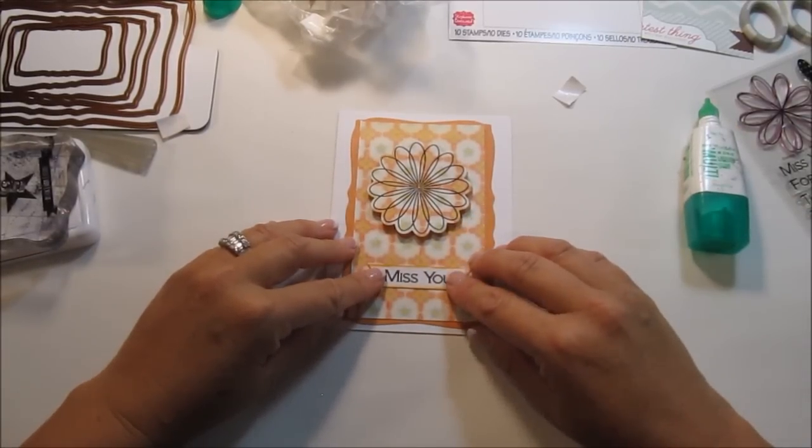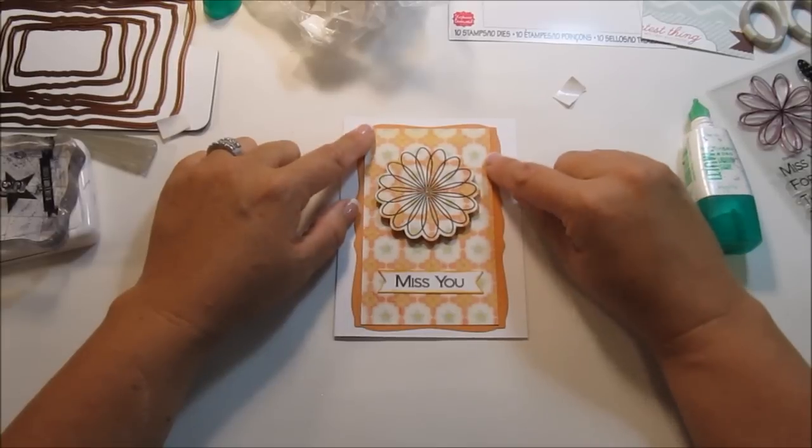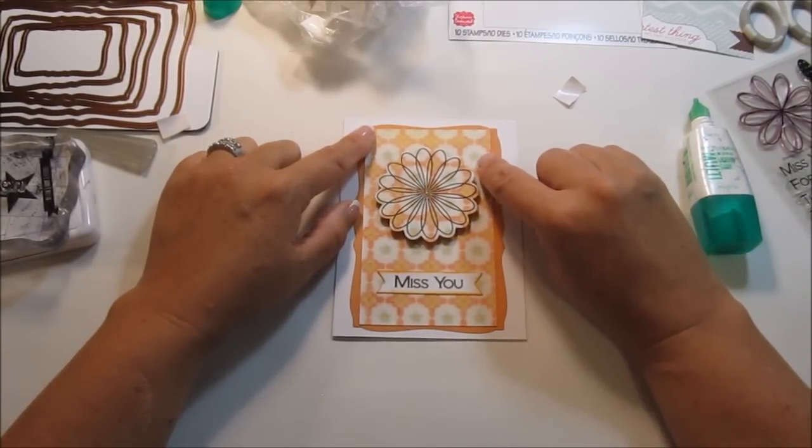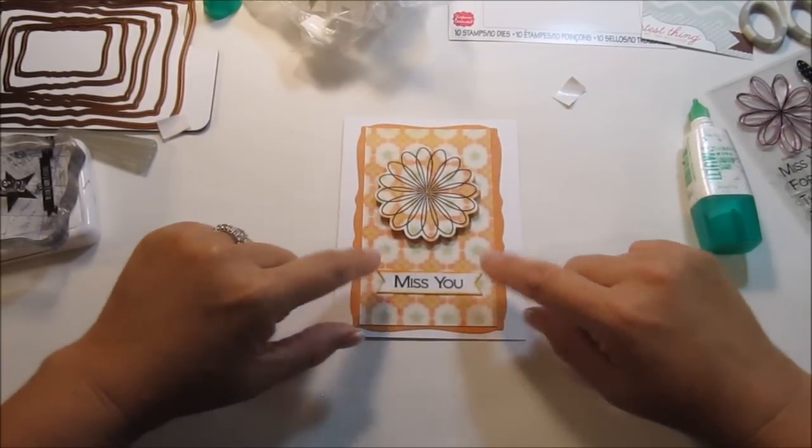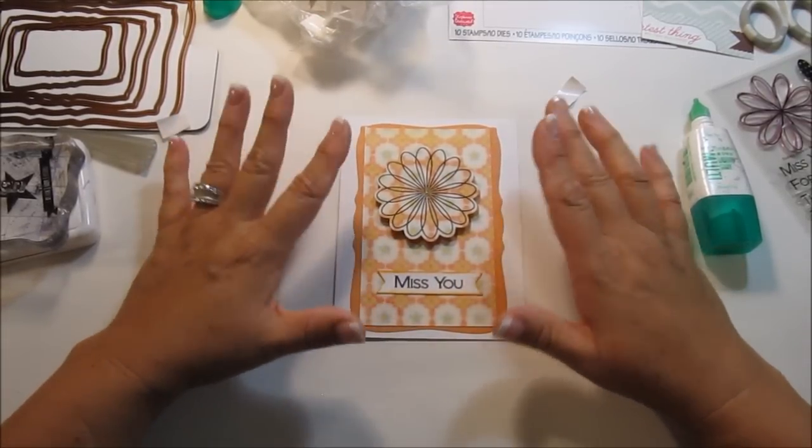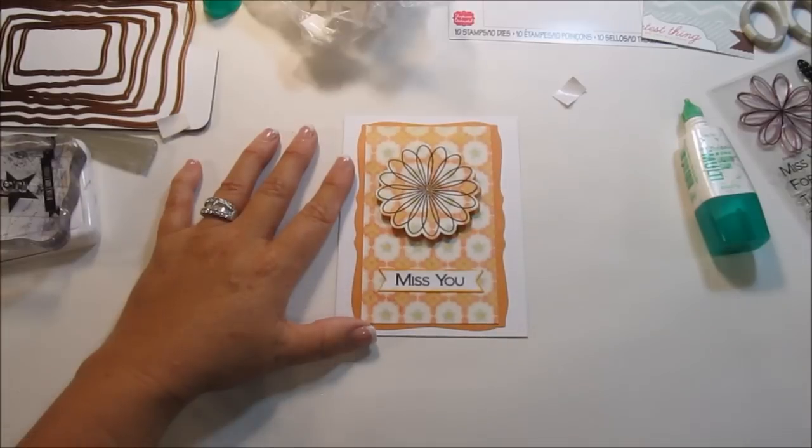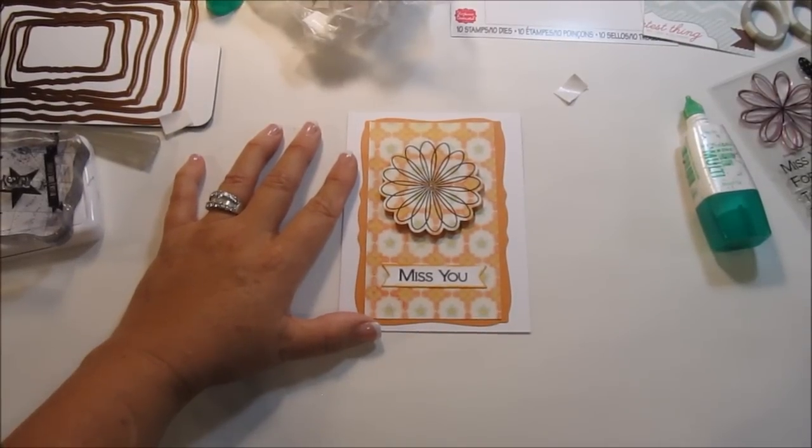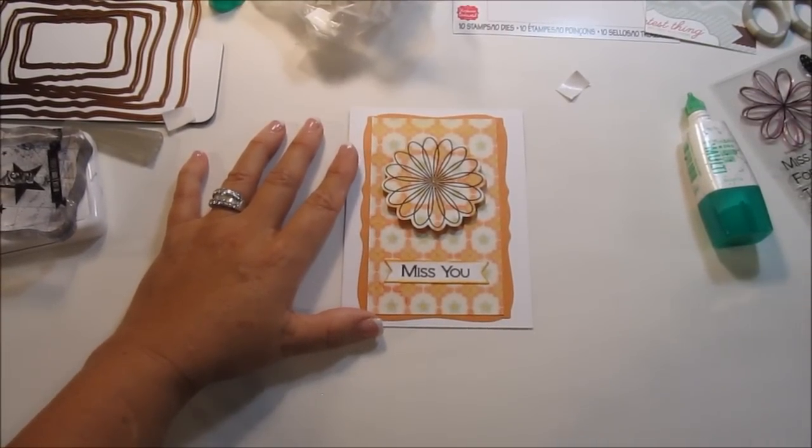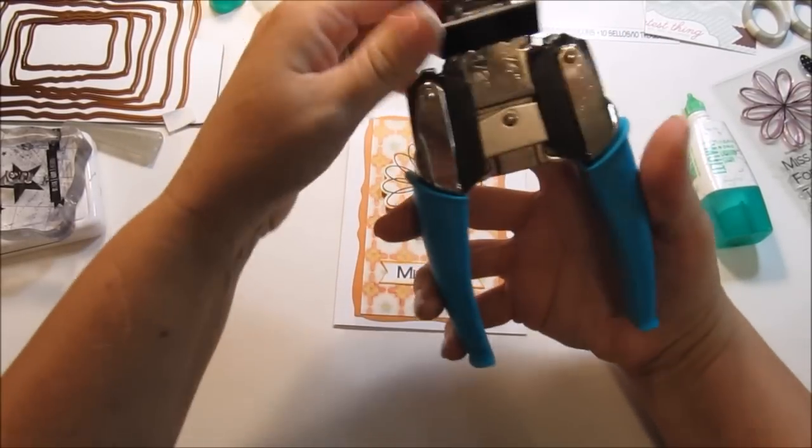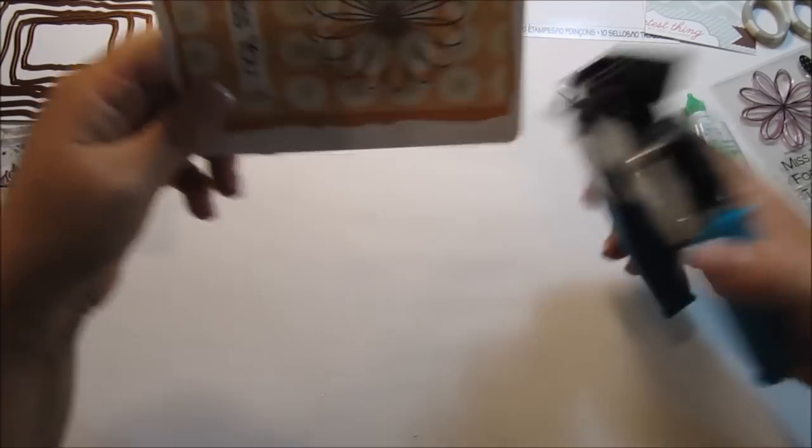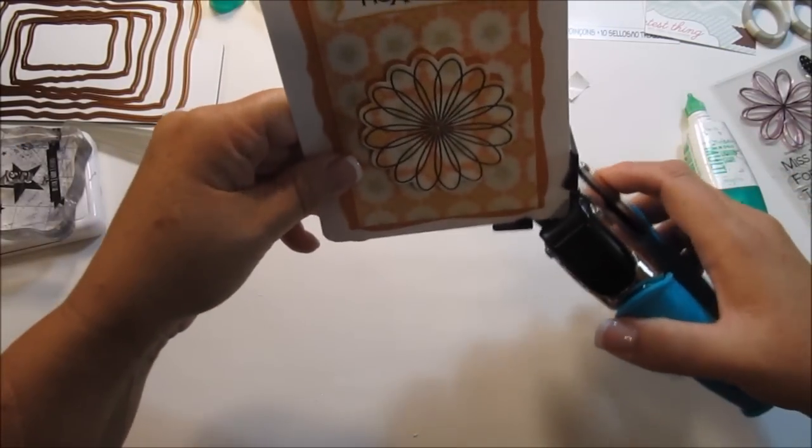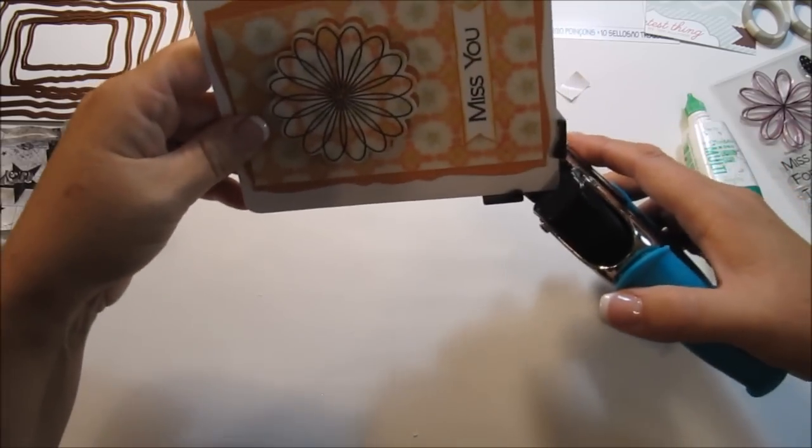Now I think if I would have done this card over I would have put maybe like this bluish teal color down as a bottom layer and then the orange and then the pattern paper, but I like the way it is. I'm thinking maybe it needs to be, corners need to be chopped, so let's do that. Just not liking the square, the whole square of it. Oh yeah, see already just doing one corner I'm thinking yep, I like it better this way.